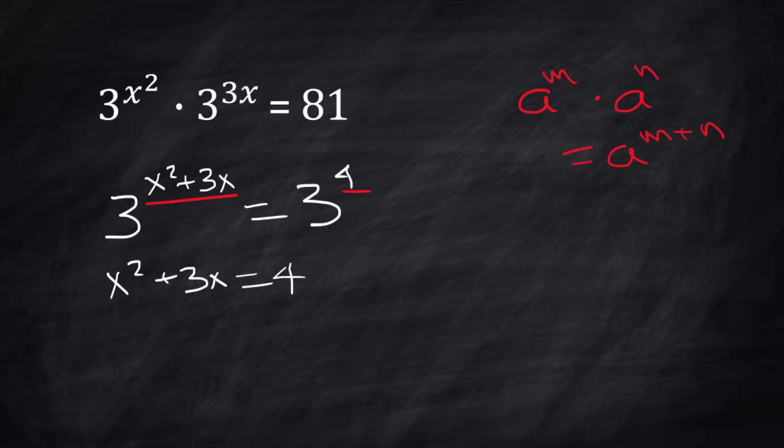Subtract 4 from both sides. We have another quadratic we're going to factor. Our two solutions are x = -4 and x = 1. I'm going to leave the check to you.